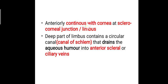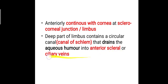Anteriorly, the sclera is continuous with the cornea at the sclerocorneal junction, which is otherwise known as the limbus. The deep part of the limbus contains a circular canal called the canal of Schlemm, which drains the aqueous humor into the anterior scleral or ciliary veins.